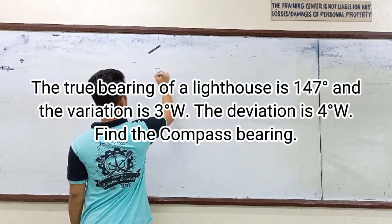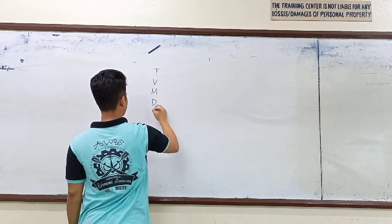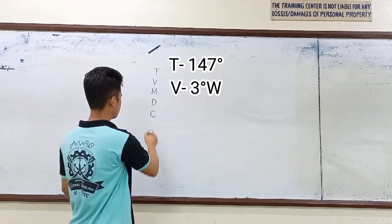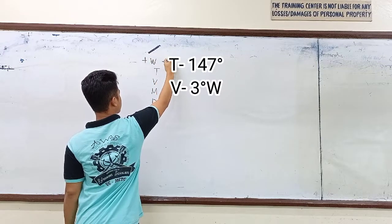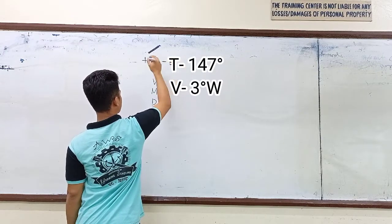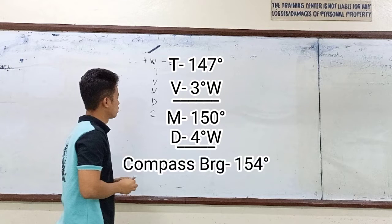The true bearing of a lighthouse is 147 degrees, the variation is 3 degrees west, and the deviation is 4 degrees west. Find the compass bearing. Using the TVMDC formula: the true bearing is 147 degrees and variation is 3 degrees west, so we add to get 150 degrees magnetic. The deviation is 4 degrees west, so we add again: 150 plus 4 equals 154 degrees compass bearing.